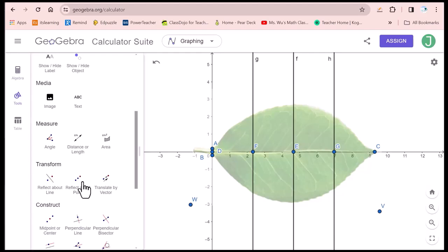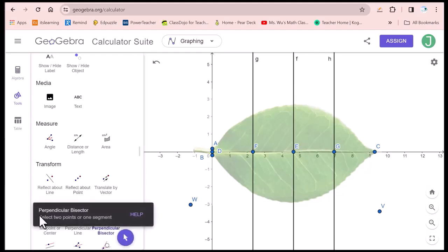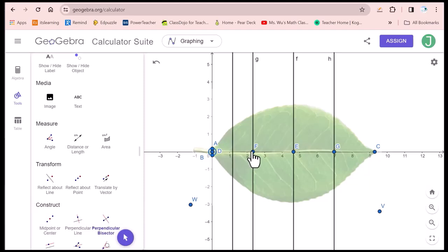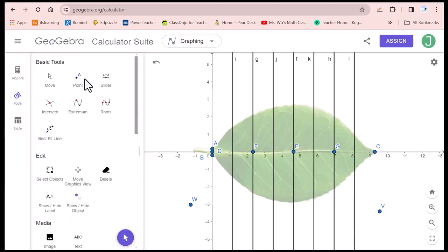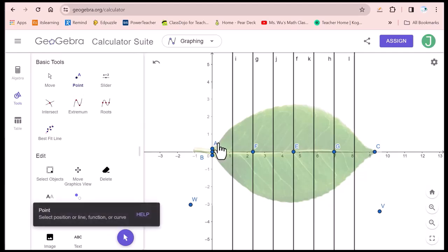We do perpendicular bisector again with points D, F, E, G, and C. Then we get the points on the upper curve of this leaf.